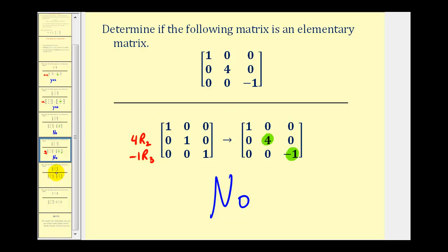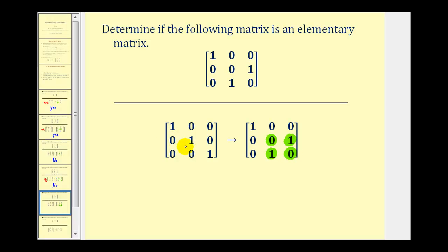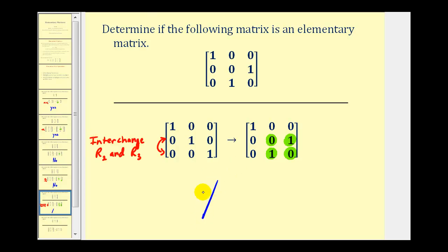Let's look at two more examples. Given this matrix, we start with the three by three identity matrix and see if we can perform one row operation to obtain the given matrix. Notice these two elements have changed, and so have these. But if we interchange row two and row three, we would obtain the given matrix. Therefore, the answer is yes — the given matrix is an elementary matrix.